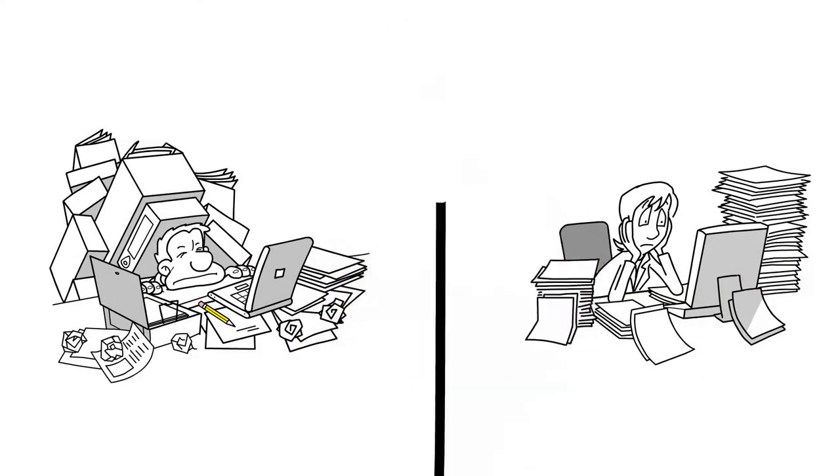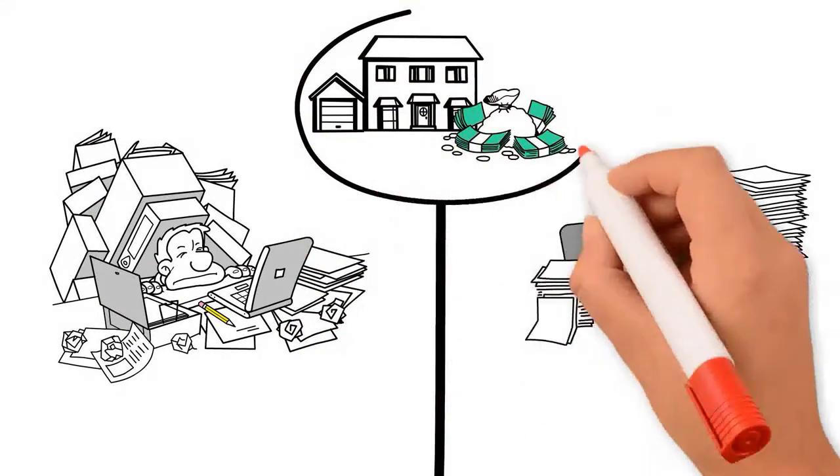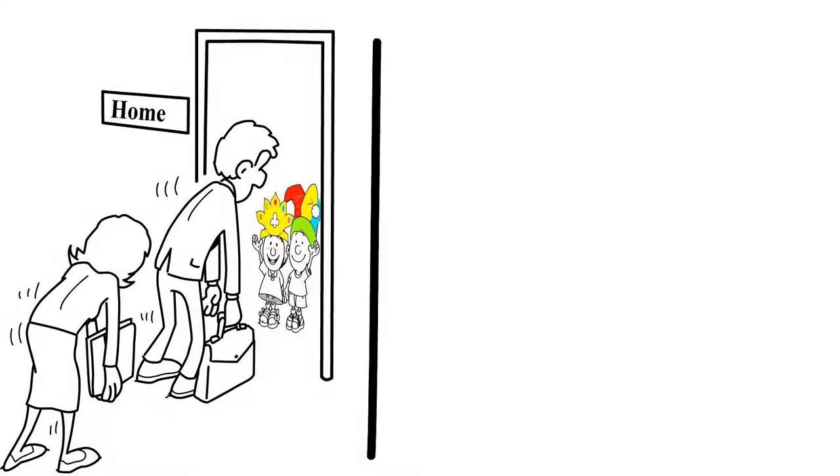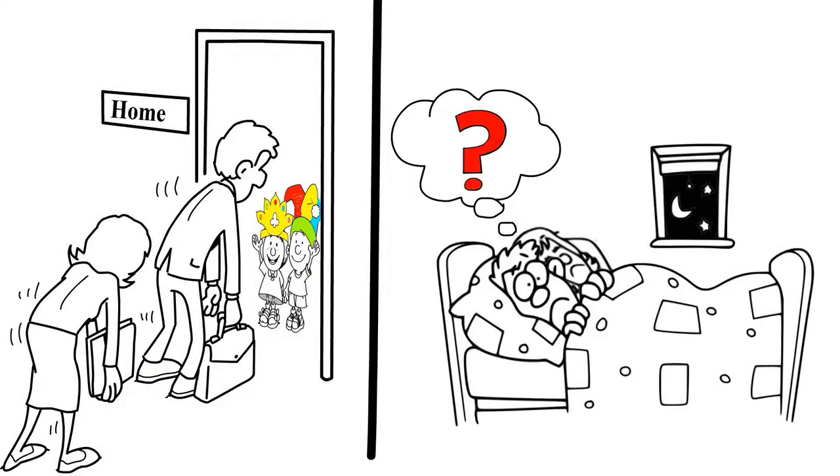John and Sue work long hours just to pay the mortgage, bills and everything else. They barely see each other or the kids and fall into bed wondering, is there a better way?